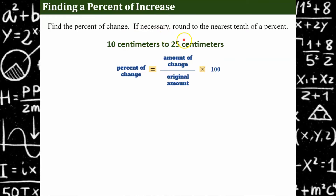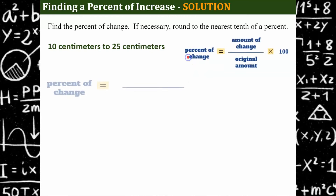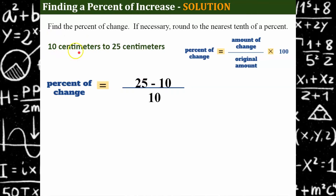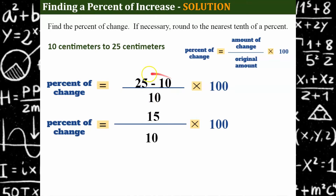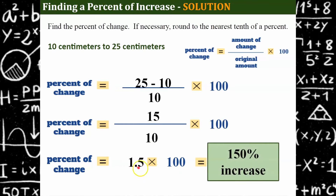This is an increase because we went from 10 to 25. The amount of change is the first thing we want to identify — we subtract: 25 subtract 10. Remember, if you do 10 subtract 25 you get a negative number, and we don't want that. We need a positive amount in our numerator. Our denominator is always the original amount, which started at 10. Multiply by 100 because we want the answer as a percent. The difference is 15, divided by 10 equals 1.5. Multiply by 100 — that's a 150 percent increase.